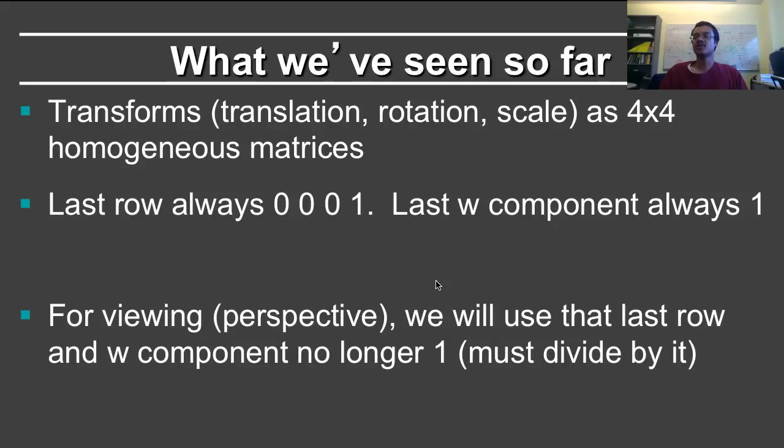To summarize what we've seen so far, we've seen transformations - translation, rotation, scale, and how to put them together. All of this is done using 4x4 homogeneous matrices. So far, they were motivated primarily by the ability to capture translation. However, 4x4 matrices are also useful to capture viewing, and indeed, there is a unified way to write the entire transformation pipeline.